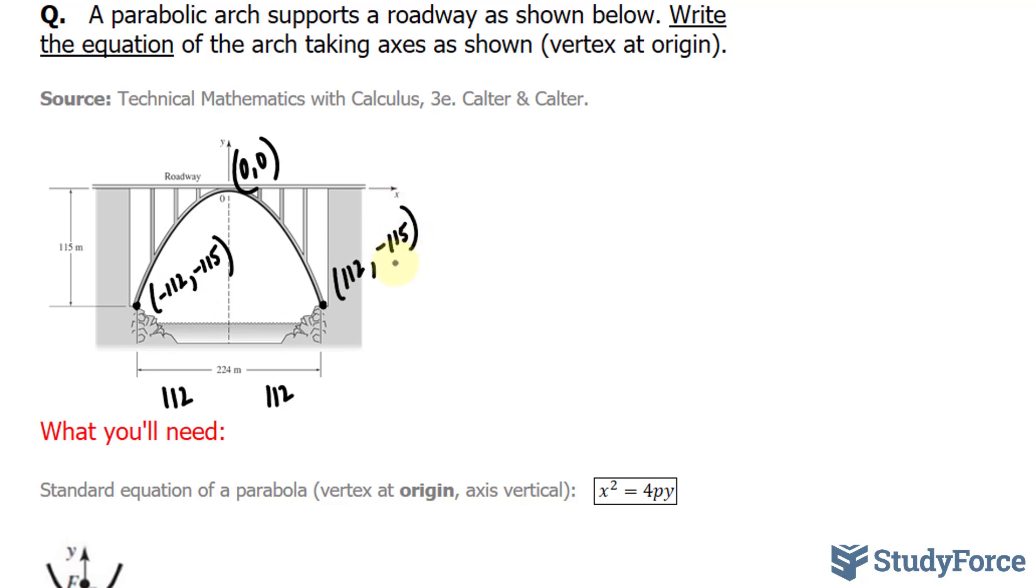We have two points in which we can work with. One of these points, and it doesn't matter which one, will be substituted into this template. Let's go ahead and do that. We have x to the power of 2. I'm going to use this point. 112 to the power of 2 is equal to 4 times p times y of negative 115.